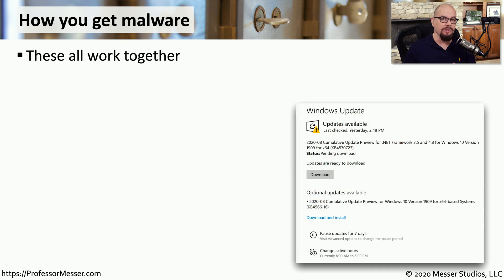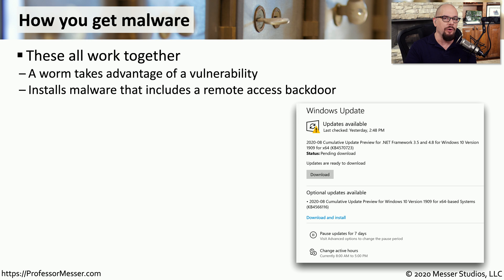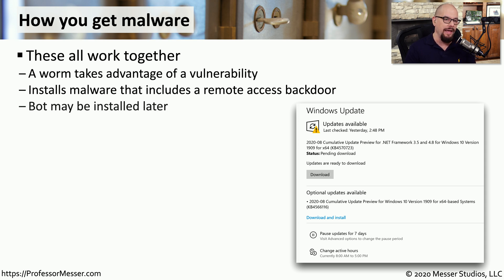Malware can find itself onto our systems in many different ways. And once the malware begins the process of installing itself, it can use other types of malware to install other types of software on your computer. For example, your computer might be susceptible to a vulnerability that a worm might take advantage of, and the worm would then install some initial malware onto your computer. That malware might have a remote access backdoor that is then going to pull other software down to your computer and install additional software and malware on top of that.